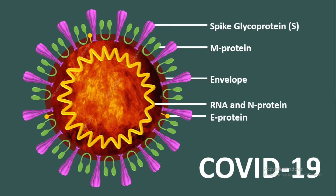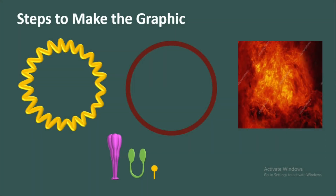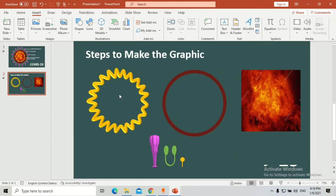Hello guys, welcome back to another video. In this video we are going to learn how to make a graphical abstract in really simple and easy steps. I've divided all the things we are going to need: one is a ribbon, the second one is a circle, third one is fire, and then these small objects, which I will create in Microsoft PowerPoint in easy and simple steps. Let's get started.